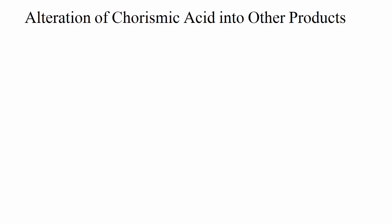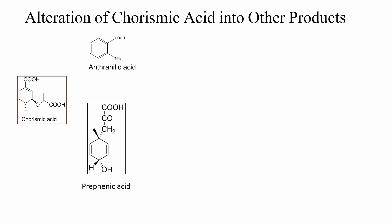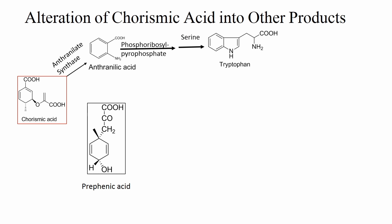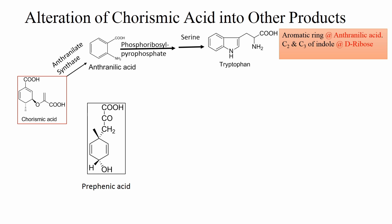Chorismic acid is the branching point in the Shikimic Acid Pathway. Chorismic acid may change to anthranilic acid or prephenate acid depending upon the enzyme involved. In the presence of enzyme anthranilate synthetase, chorismic acid is changed to anthranilic acid. Anthranilic acid is the precursor for tryptophan through a series of reactions. It should be noted that the aromatic ring C2, C3 of the indole ring and the alanine side chain of tryptophan are derived from anthranilic acid, D-ribose, and L-serine respectively.